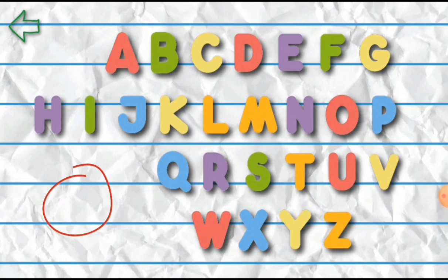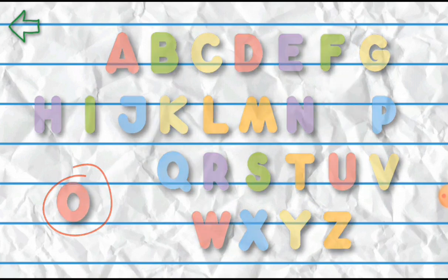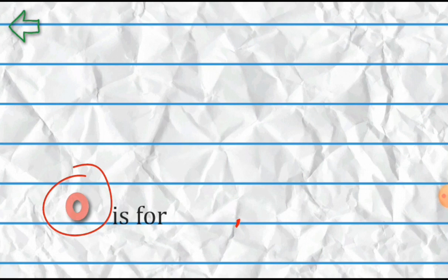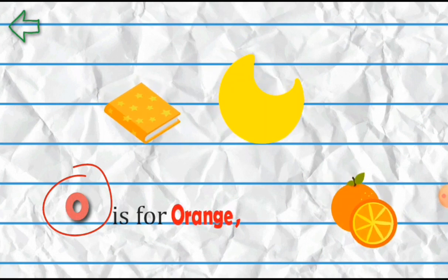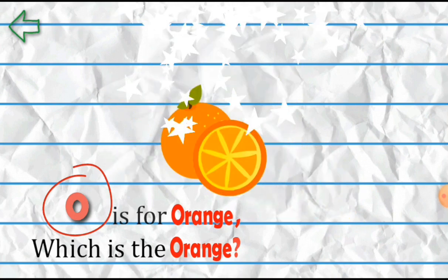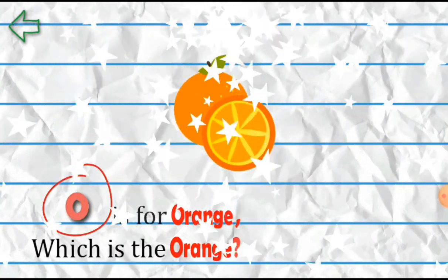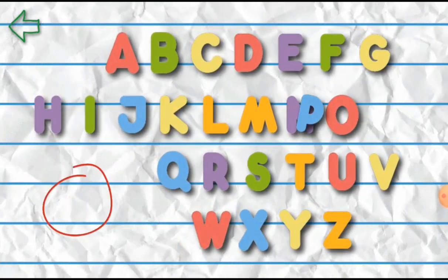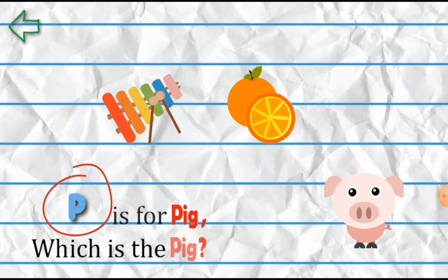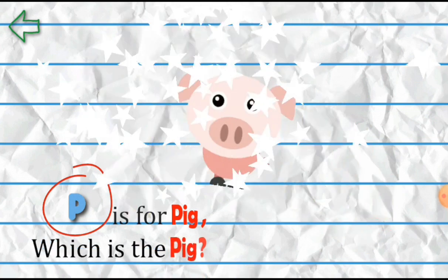O is for Orange. Which is that? Orange. P is for Pig. Which is that? Pig.